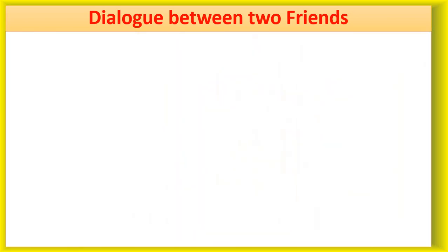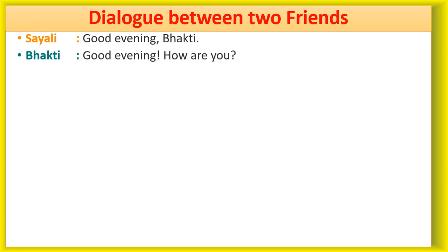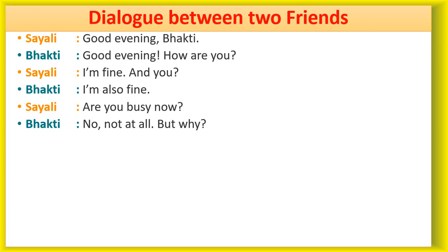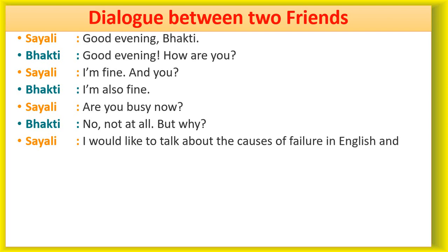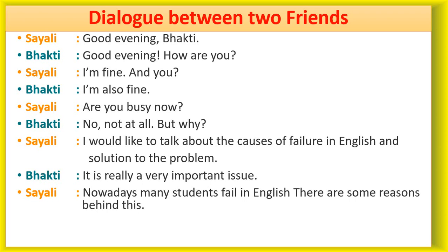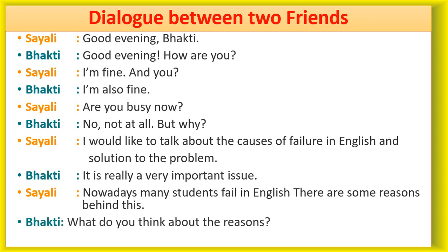The two friends are Saili and Bhakti. Saili said: Good evening, Bhakti. Bhakti said: Good evening, how are you? Saili said: I am fine, and you? Bhakti said: I am also fine. Saili said: Are you busy now? Bhakti said: No, not at all, but why? Saili said: I would like to talk about the causes of failure in English and solutions to the problem. Bhakti said: It's really a very important issue. What do you think about the reasons?